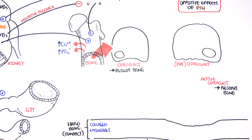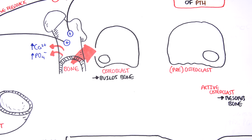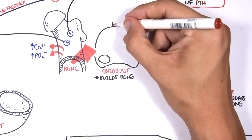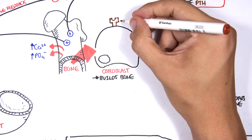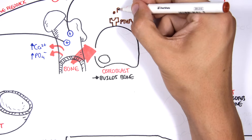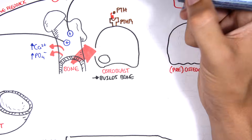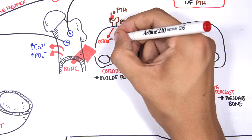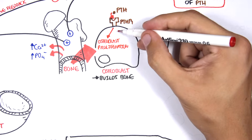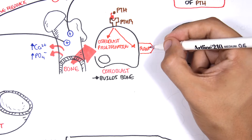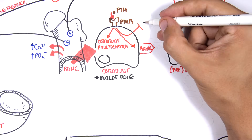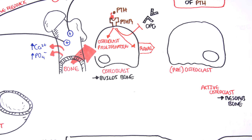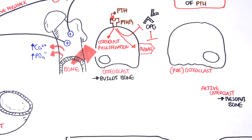Osteoblasts have the main role in activating osteoclasts, even though they have opposite functions. Osteoblasts have a parathyroid hormone receptor, and when parathyroid hormone binds to it, three things happen: osteoblasts proliferate; they express RANK ligand on their surface; and they stop producing osteoprotegerin (OPG). Normally OPG inhibits RANK ligand from binding to its receptor, but parathyroid hormone suppresses OPG production, removing this inhibition.